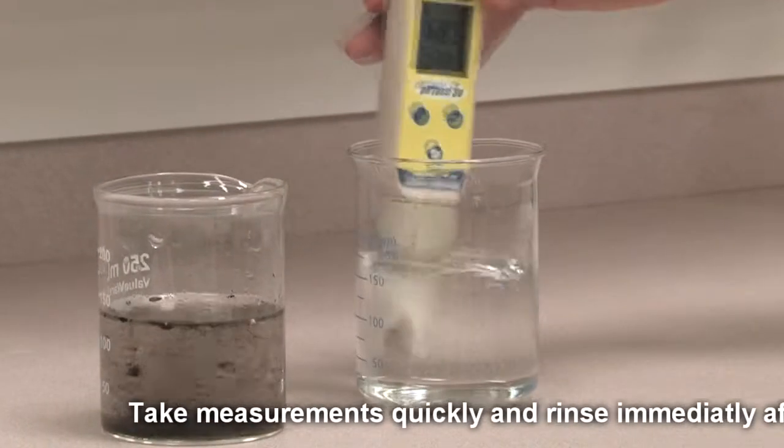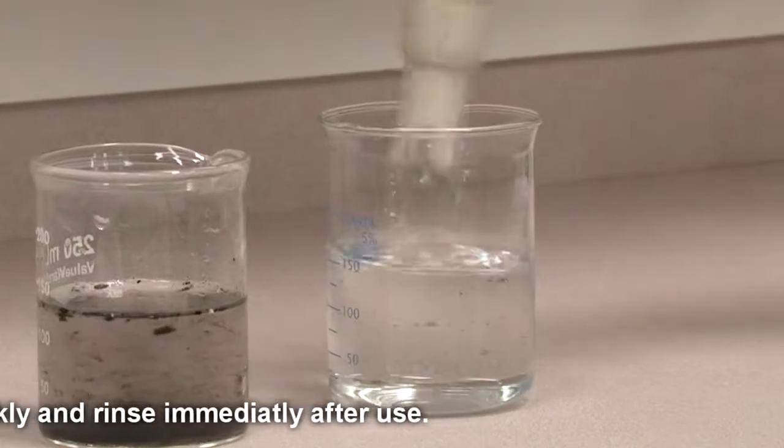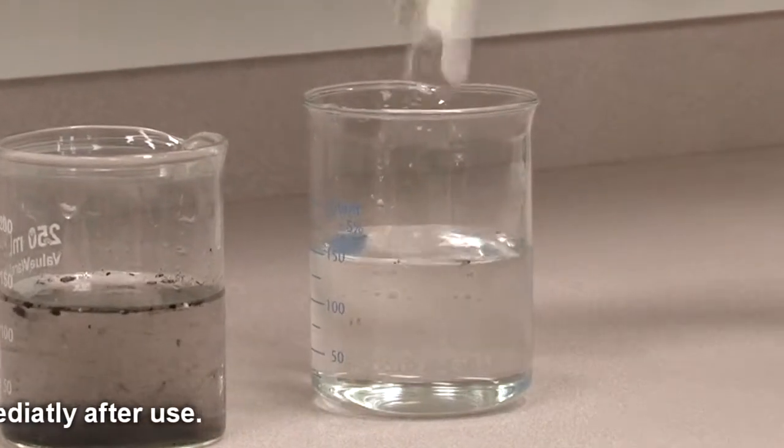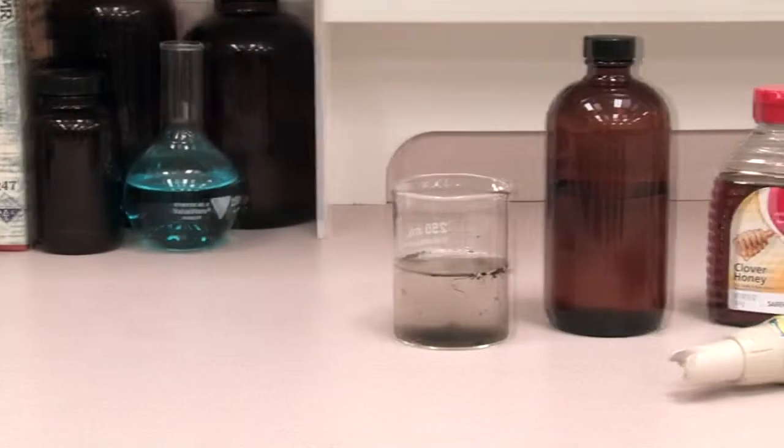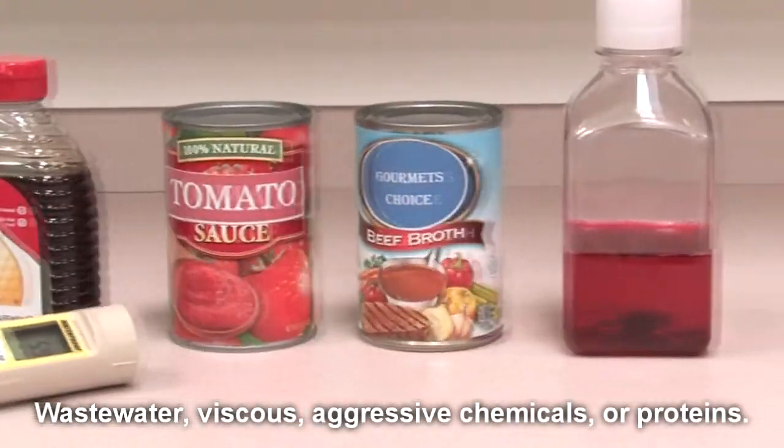When taking measurements in aggressive chemicals, dirty or viscous samples, and heavy metal or high protein solutions, take readings quickly and rinse electrodes immediately after. If performance drops after using these types of solutions, try cleaning and reconditioning the electrode as follows.